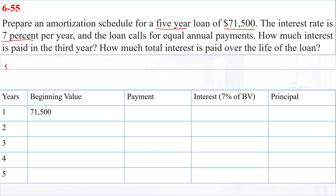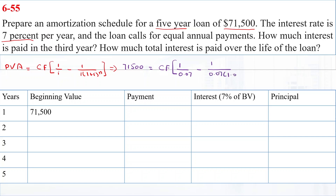Our formula will be: Present Value of Annuity = Cash Flow × [1/0.07 − 1/(0.07 × 1.07^5)]. So $71,500 equals cash flow multiplied by that factor. Solving this, we get a cash flow of $17,438.18. We will make payments of $17,438.18 for five years to repay our loan of $71,500 at seven percent.